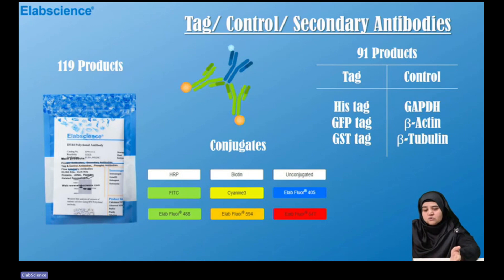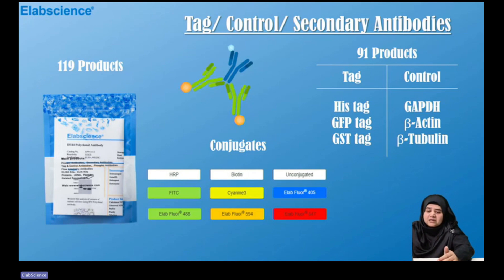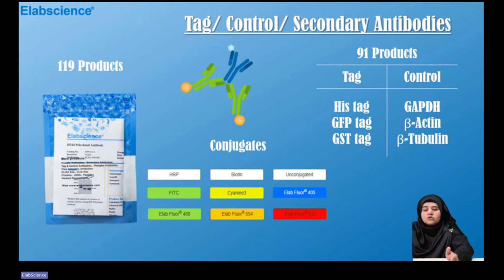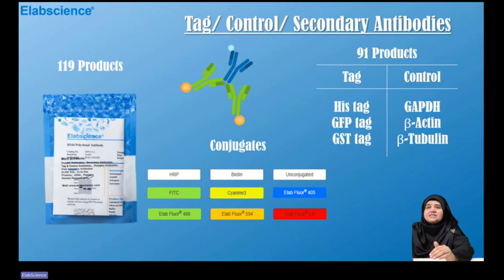Commonly used cytoplasmic internal controls include GAPDH, beta-actin, and beta-tubulin. Conventional tag antibodies include His-tag, GFP-tag, and GST-tag. You can choose according to your needs. For tag control and secondary antibodies, we have about 119 products, and for tag control antibodies separately, we have 91 products.